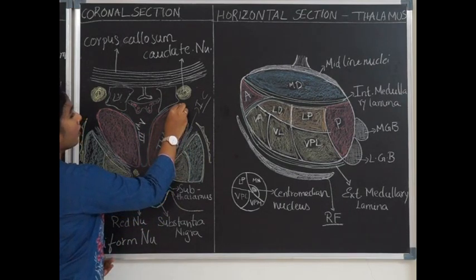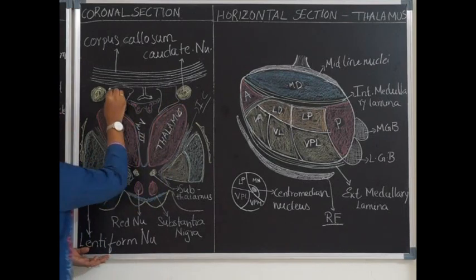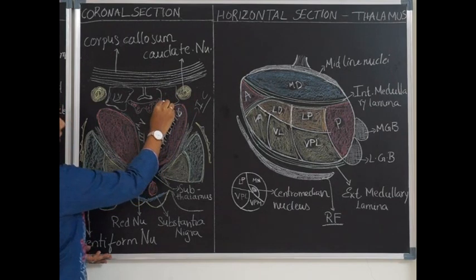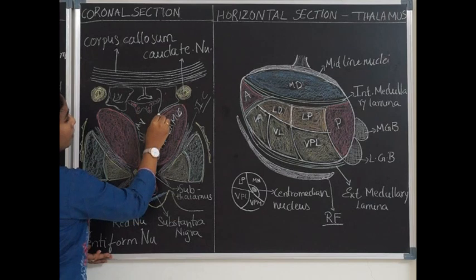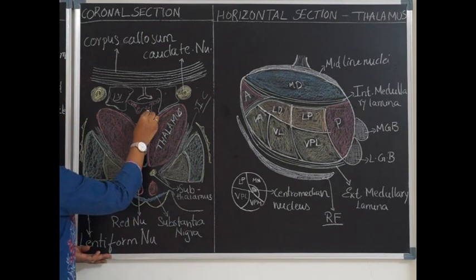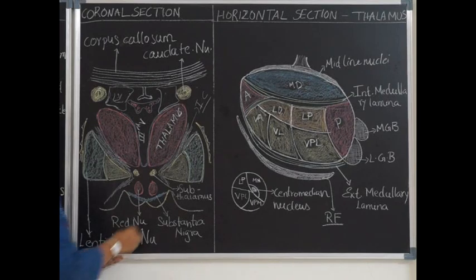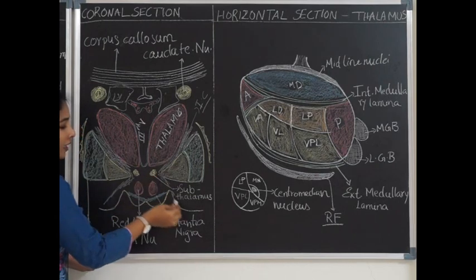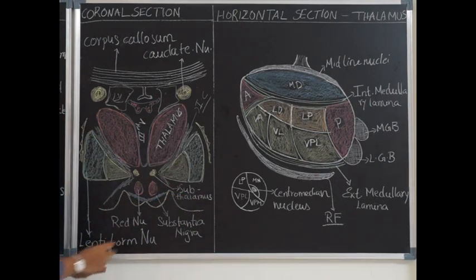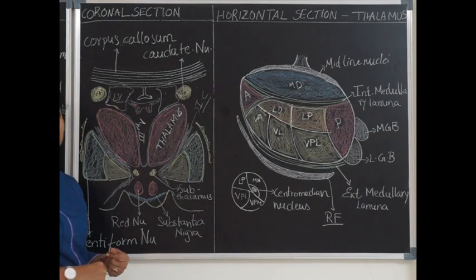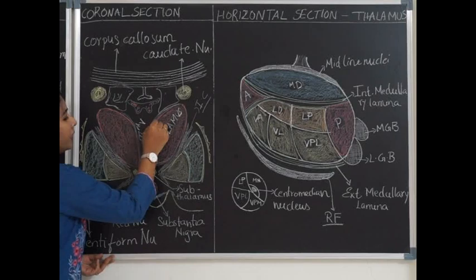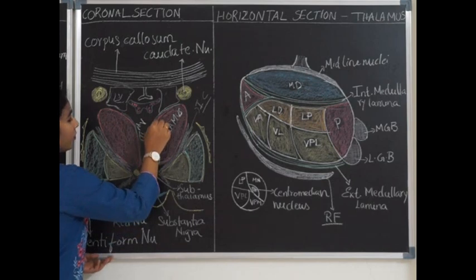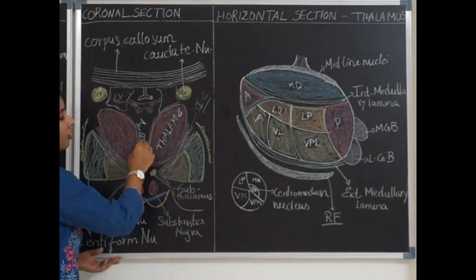The superior surface forms laterally the floor of the lateral ventricle, while the medial part of the superior surface is related to the tela choroidea of the third ventricle. The inferior surface of the thalamus anteriorly is merged with the subthalamus; the posterior part is free, called the pulvinar. The medial surface of the thalamus forms the lateral wall of the third ventricle.